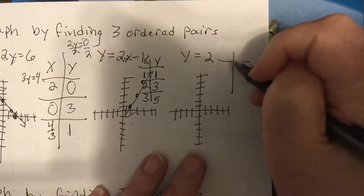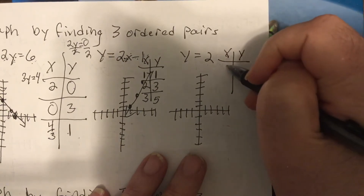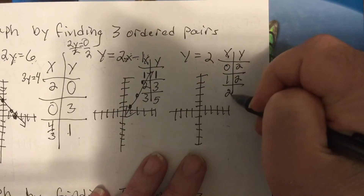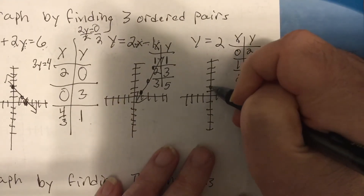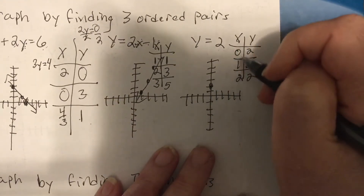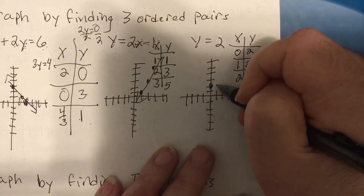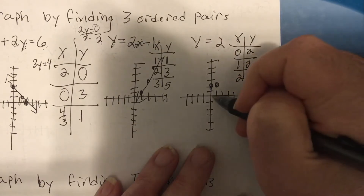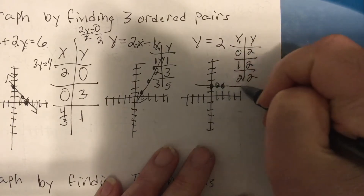All that matters here is y equals two, so we could have (0, 2), (1, 2), (2, 2) — over one, up two, bang — we have a horizontal line.